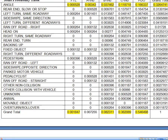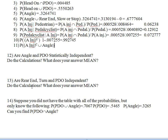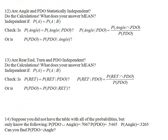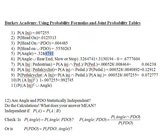Let's move on to the next problems — the really interesting ones. Number 12: are angle and PDO statistically independent? Do the calculations, don't guess. To check statistical independence, we compare the probability of an angle accident — which is 0.3264741 — to the probability of an angle accident given we know it's a property damage only accident. We have to calculate this conditional probability.